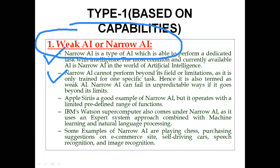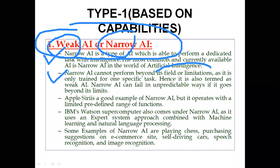Narrow AI cannot perform beyond its field or limitations, as it is only trained for one specific task. That's why it is known as Weak AI. It is not truly weak, but we use the term weak or narrow because it can perform tasks with intelligence only within the specific domain for which it has been designed. If it goes beyond those limits, it will fail in an unpredictable way.